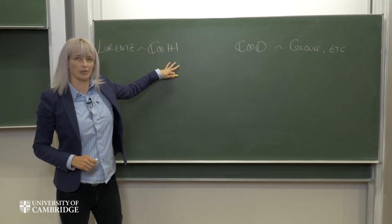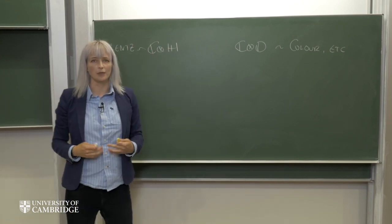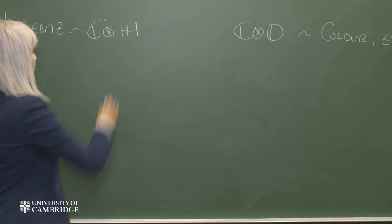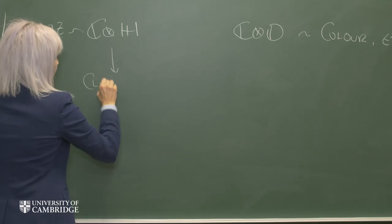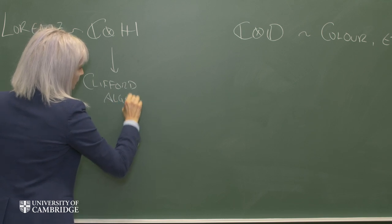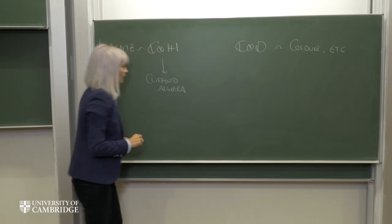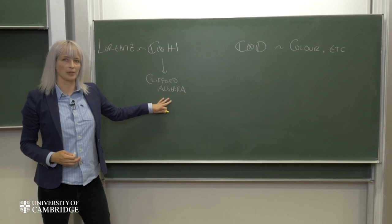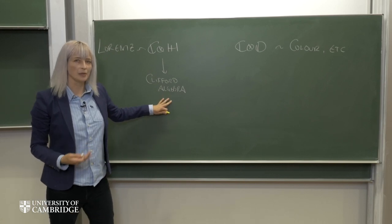So we're going to start with the complex quaternions, and we're going to find that they give a faithful representation of a Clifford algebra. And once we have a Clifford algebra, we're pretty much home free, because from here we know how to build spinners.